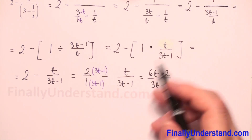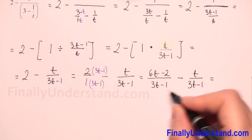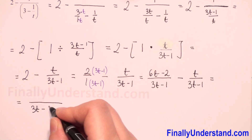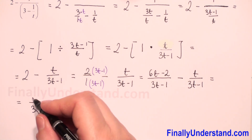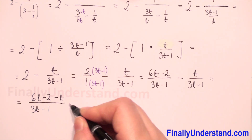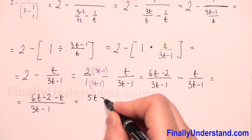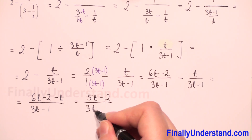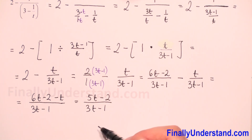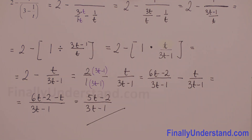Next we have minus — we copy the second fraction. Now when we have the same denominator, we copy the numerator and subtract: 6t minus 2, and we have minus t. So this equals 6t minus t is 5t, minus 2, over 3t minus 1. Because we cannot factorize anything here, we cannot reduce anything in the numerator and denominator. So this is my solution.